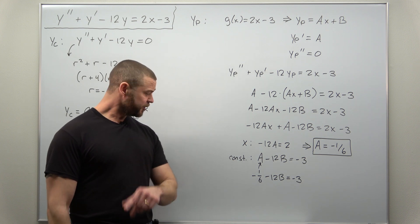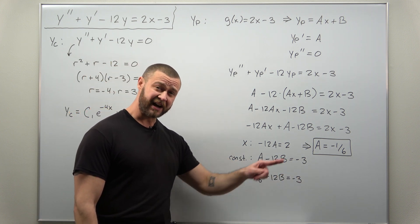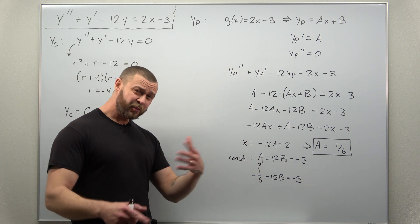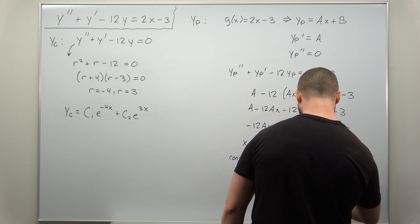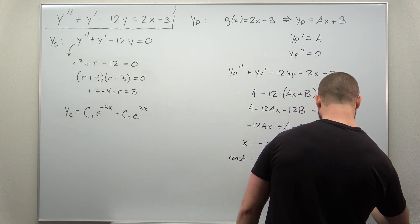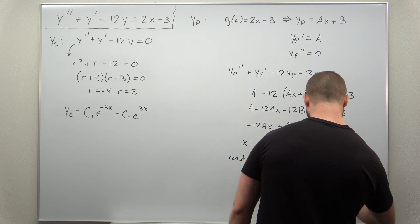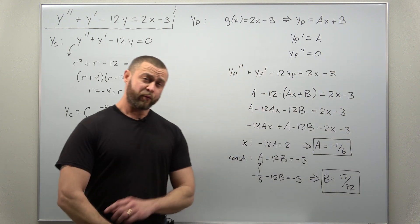If you go through a little bit of work, add the one over six to the other side, fiddle around with common denominators, what you should find is you get b as 17 over 72.